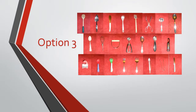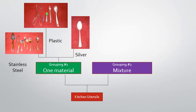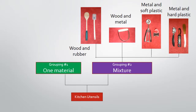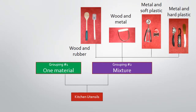Here is a third example of sorting options, so that we'll have several groupings to compare. Let's say this time we categorize first by the material each utensil is made of. Those made of only one material are made either of stainless steel, plastic, or silver. The utensils made of more than one material could be divided into wood and rubber, wood and metal, metal and soft plastic, and metal and hard plastic. When your students make their cladograms, they would show all these categories on the same cladogram.